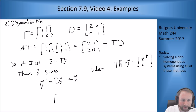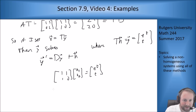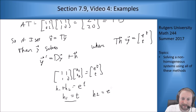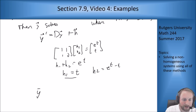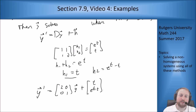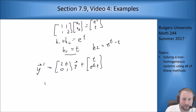I solve T·H = G: [1,1;1,0]·[H1;H2] = [e^t; t]. Writing this out gives H1 + H2 = e^t and H1 = t. So H1 = t and H2 = e^t − t. Plugging in D, I get Y' = [2,0;0,1]·Y + [t; e^t − t]. This means I can write two separate equations: Y1' = 2Y1 + t and Y2' = Y2 + e^t − t.